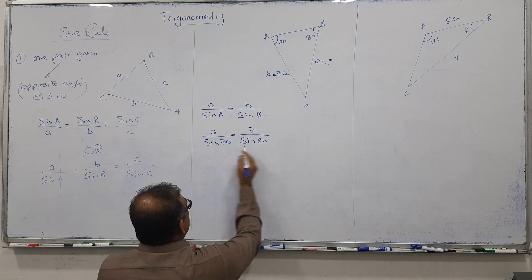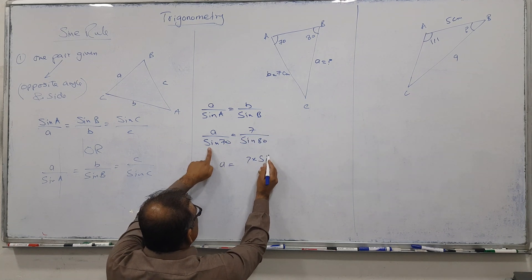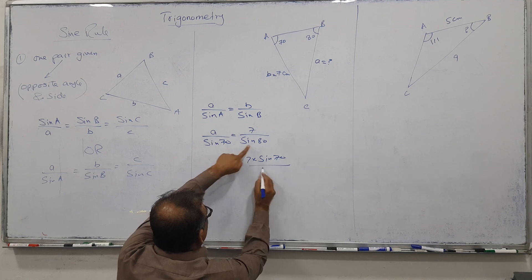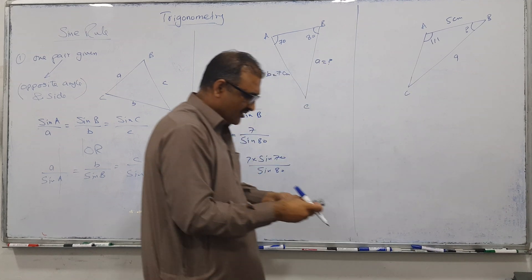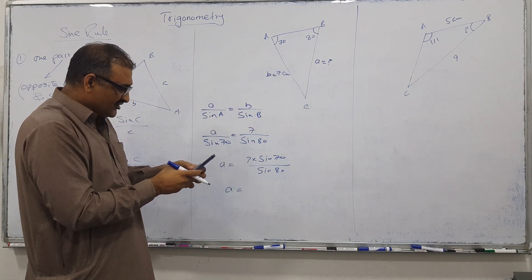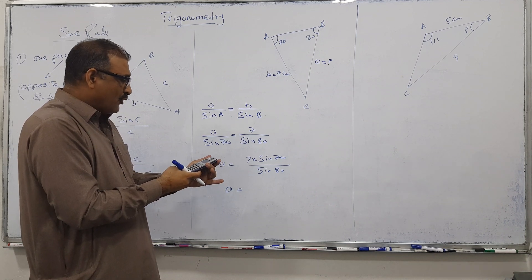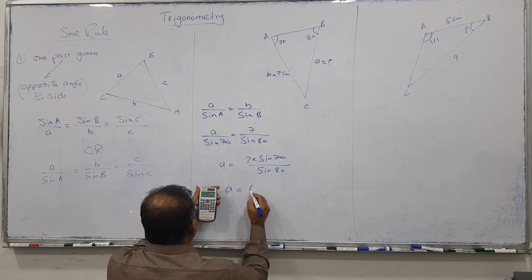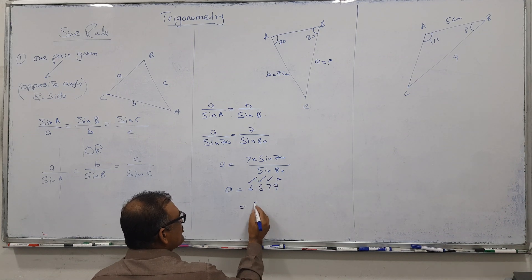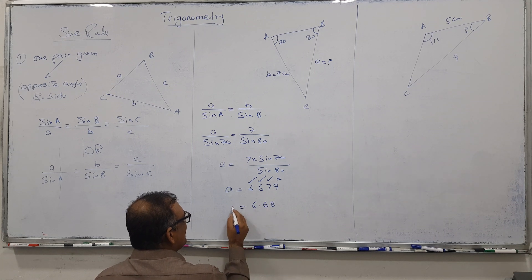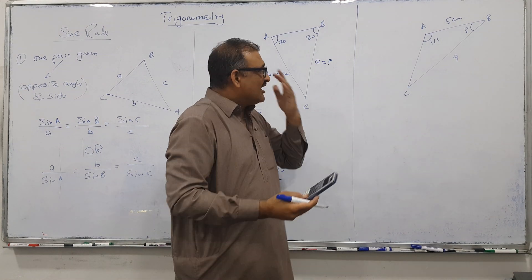Cross-multiplying gives: a equals 7 times sin 70°, divided by sin 80°. Typing this into the calculator: 7 times sin 70 divided by sin 80, the answer is 6.679, which rounds to 6.68 cm. So small a equals 6.68 cm.